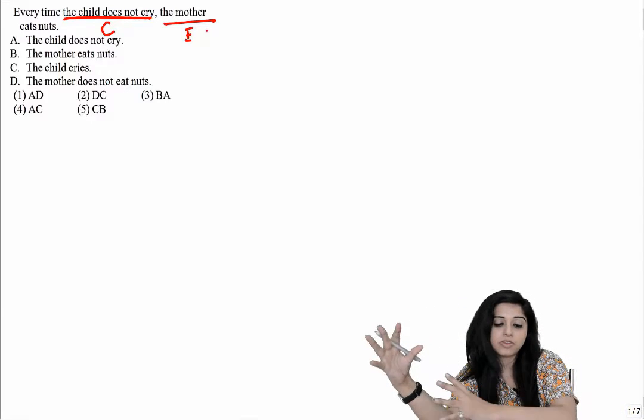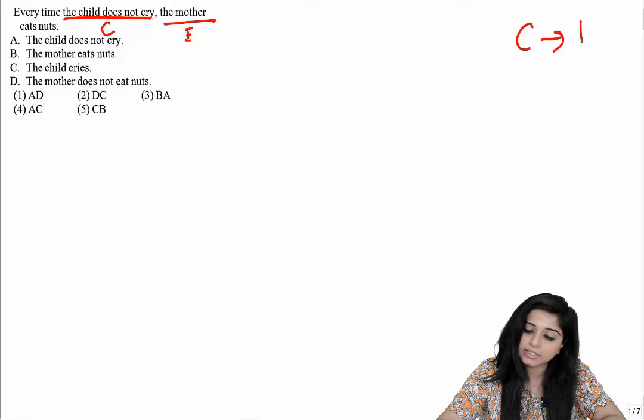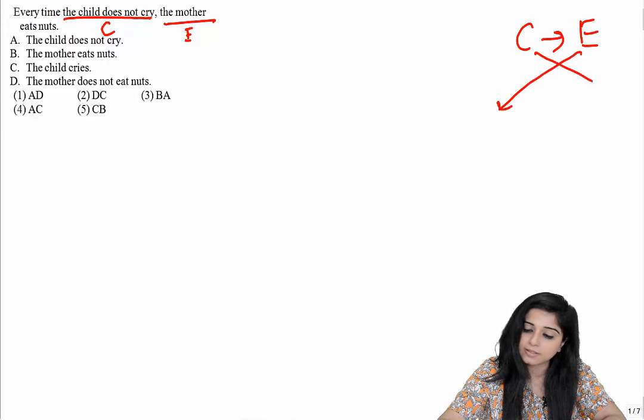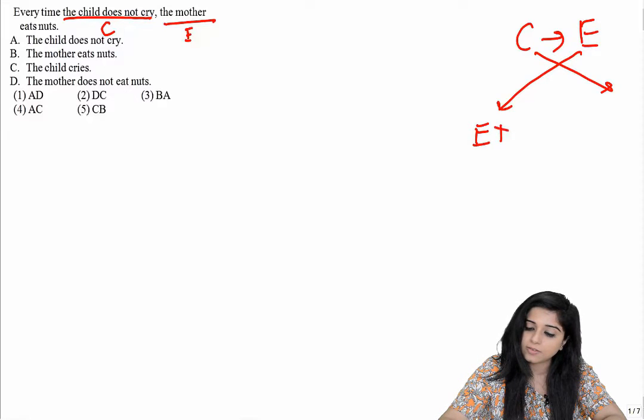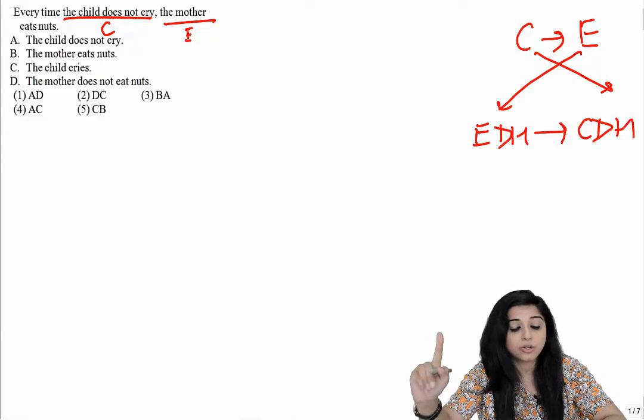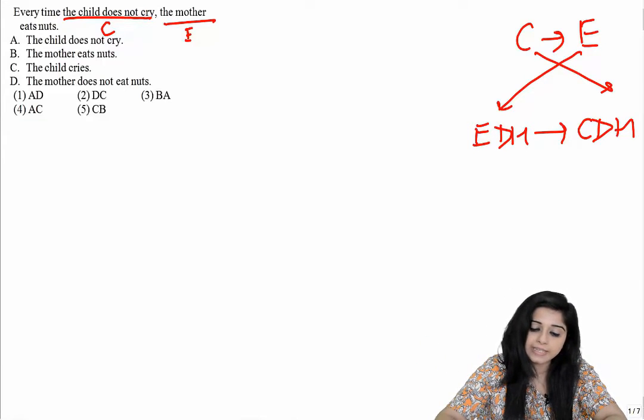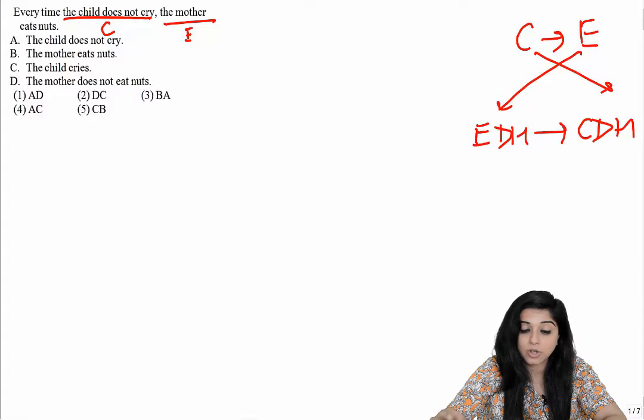Now what you will do: write these are the only case scenarios when you're definitely going to get an answer. C says what is C? C is cause - child does not cry.